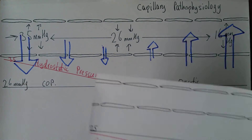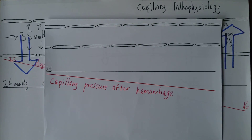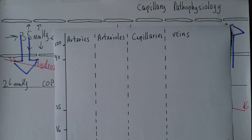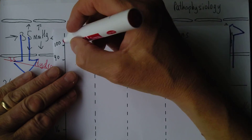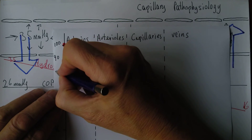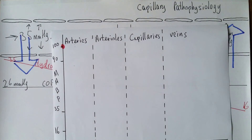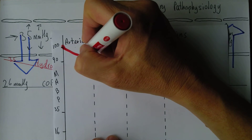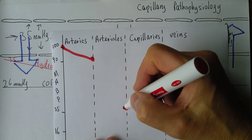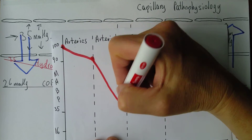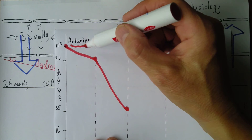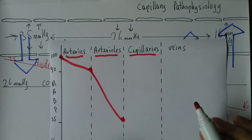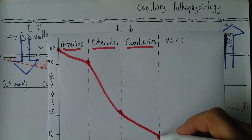The next condition to consider is after hemorrhage. Normally, mean arterial blood pressure in the larger arteries might be around 100, dropping to about 90 through the arterial system. There is then a significant pressure drop in the arterioles down to about 35 millimeters of mercury, and then a further drop across the capillaries from about 35 down to 16 millimeters of mercury, with pressure even lower in the veins.